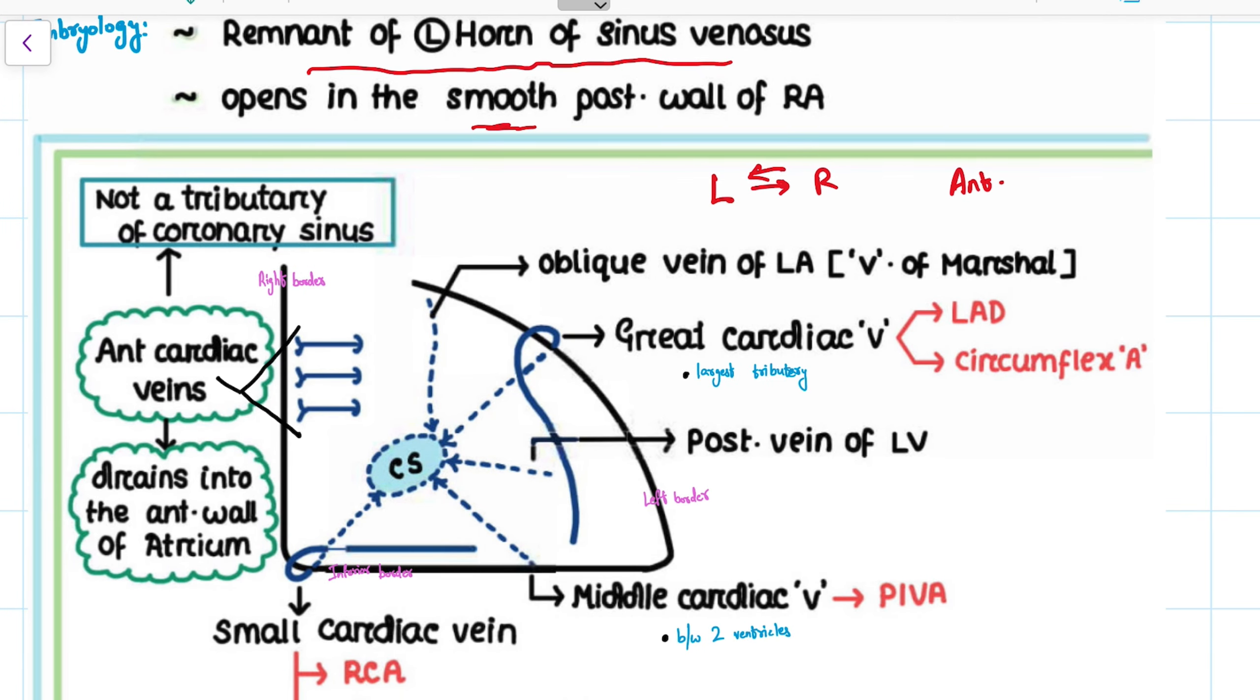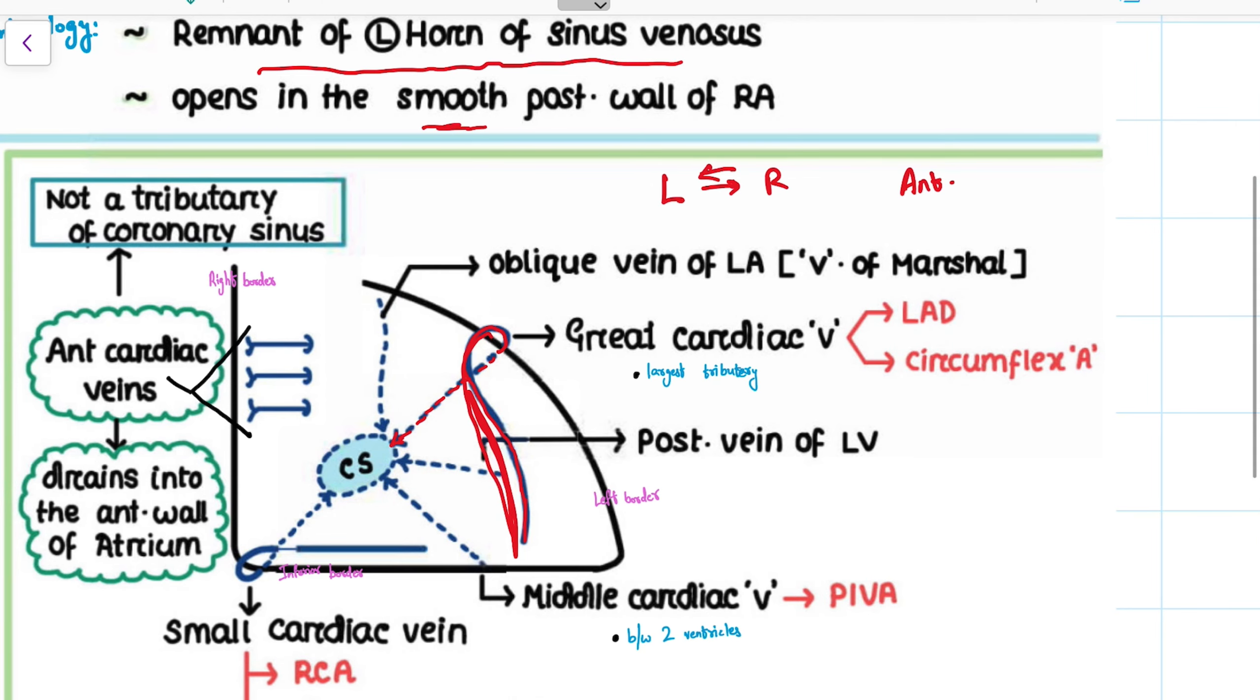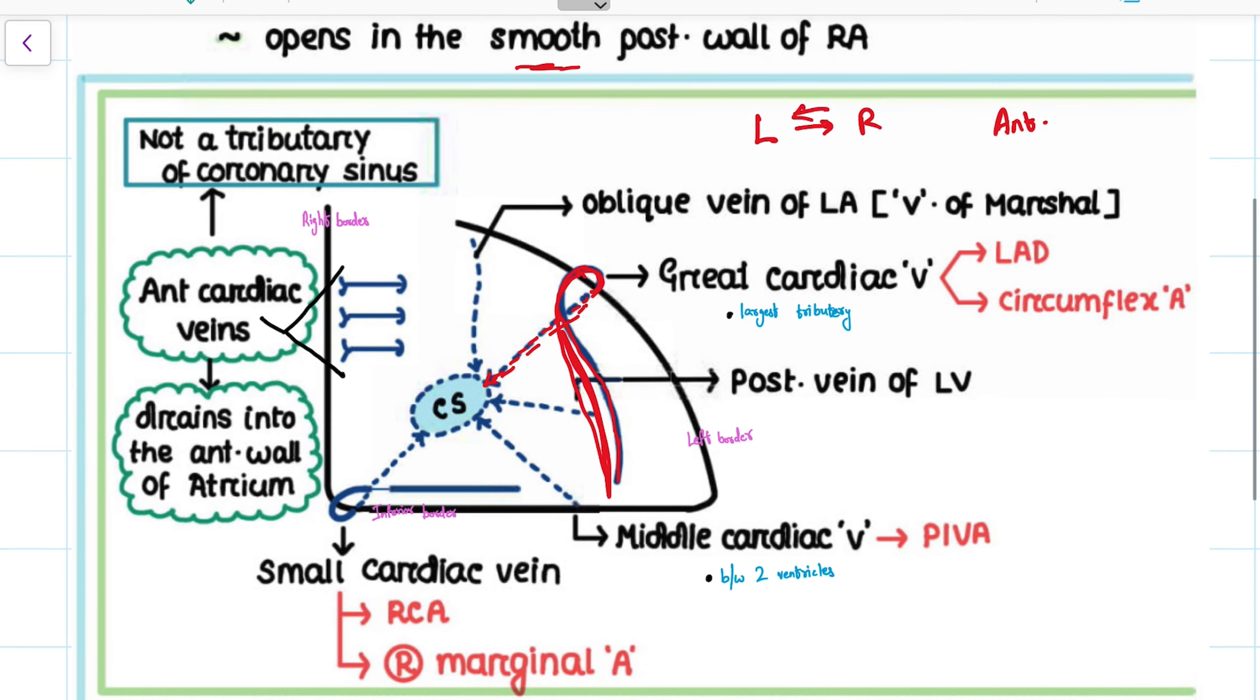So it is present in the anterior surface and then winds around and goes to the posterior aspect and drains into the coronary sinus. In the anterior view, you see this place. What artery runs over here? The LAD. Left anterior descending artery runs over here and it continues as the circumflex artery, right? This is the circumflex artery.